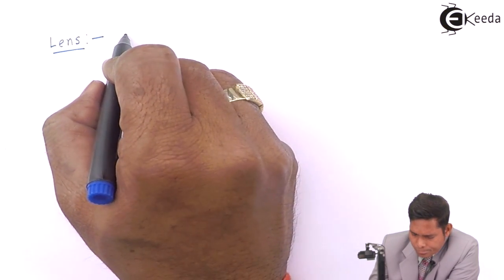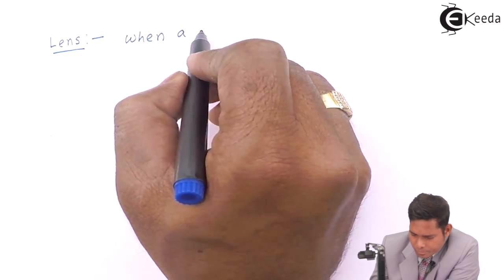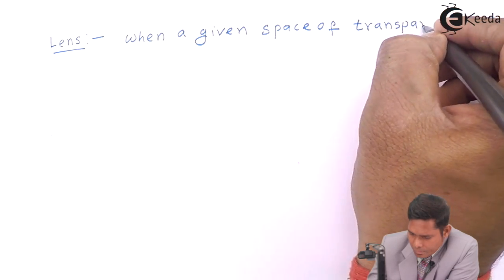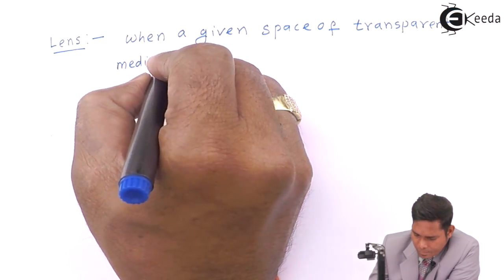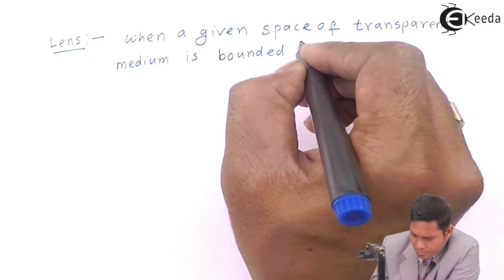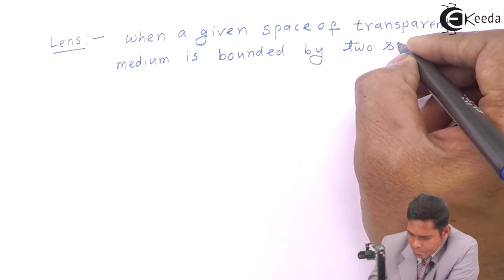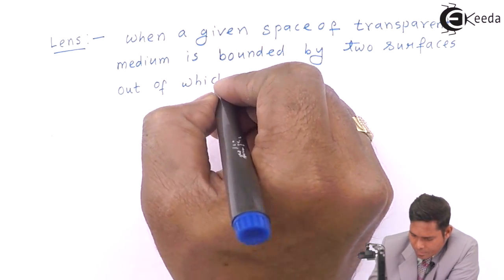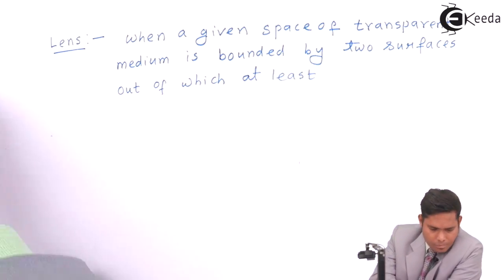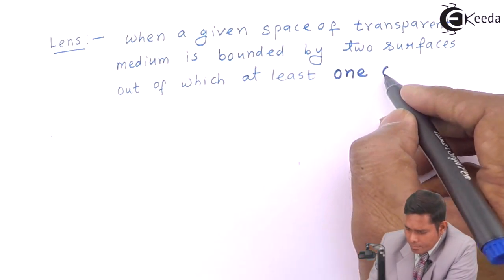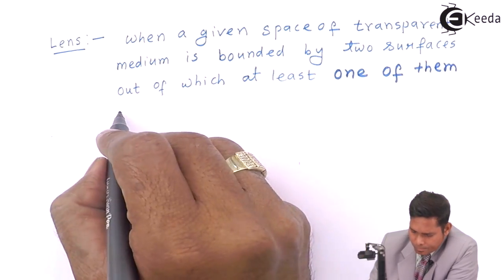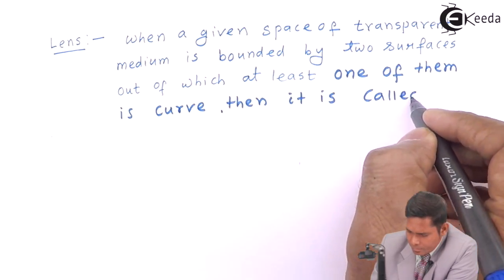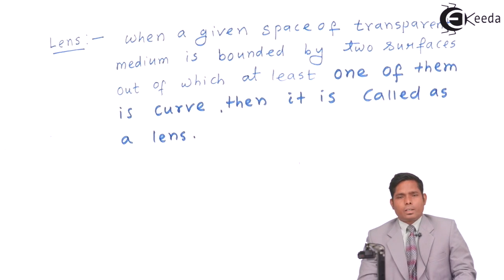So the definition is: when a transparent medium meets these conditions, it is called a lens.